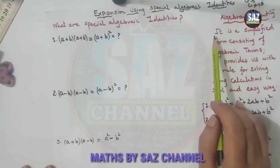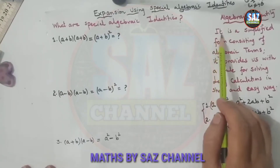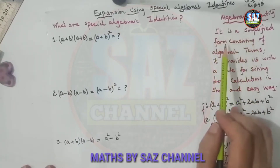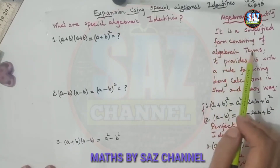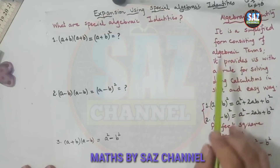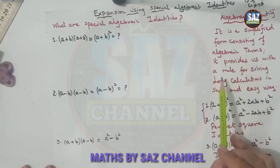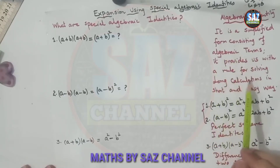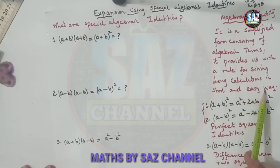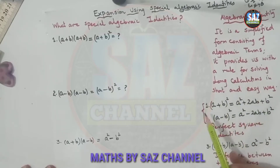Algebraic identities are a simplified form consisting of algebraic terms. They provide us with the rule for solving long calculations in a short and easy way. There are three commonly used identities.